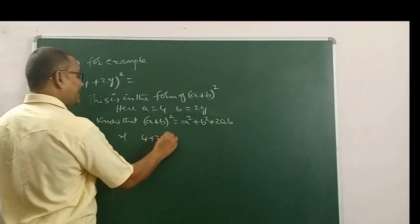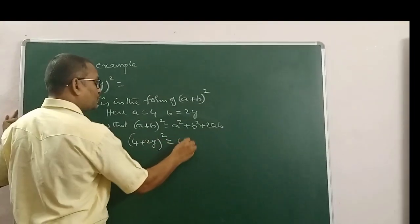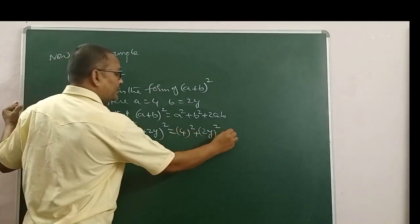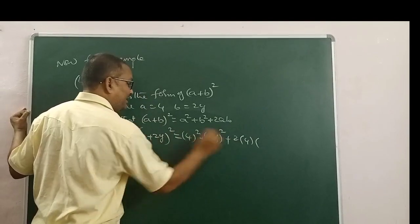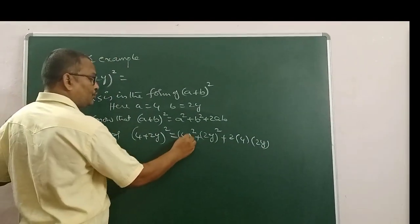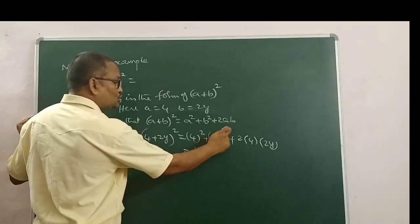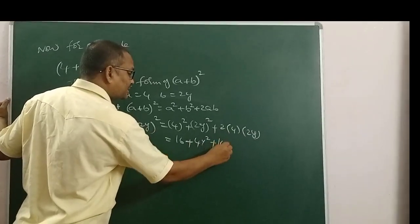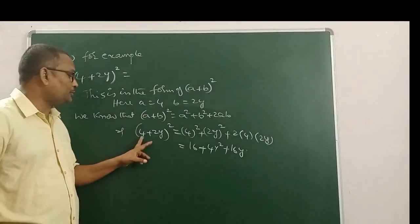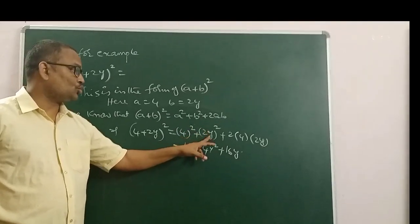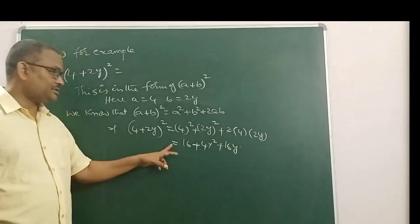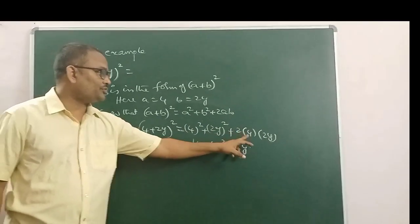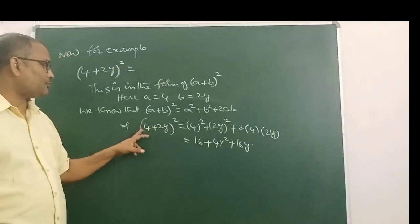That implies 4 plus 2Y whole square is equal to: A means 4, so 4 square; plus B means 2Y, so 2Y whole square; plus 2AB, that is 2 into 4 into 2Y. That equals 16 plus 4Y square plus 16Y. This is the expansion of 4 plus 2Y whole square.